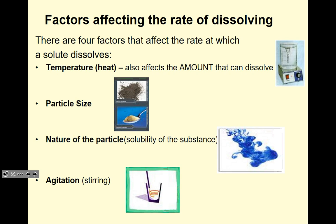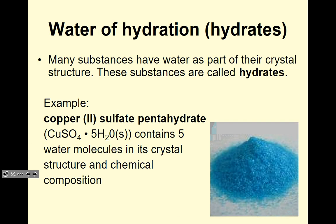There are four factors that affect the rate at which a solute dissolves. Temperature: if you heat a solution you can dissolve more solute — for example, heating water lets you dissolve more sugar. Particle size: increased surface area speeds dissolving, so a tablespoon of sugar dissolves faster than a cube. Nature of the particle: for compounds check the solubility table; for molecules check polarity. Agitation: stirring moves particles faster, increasing the rate of dissolving.